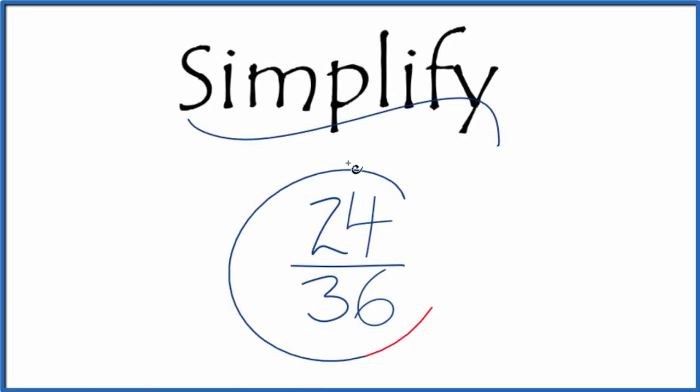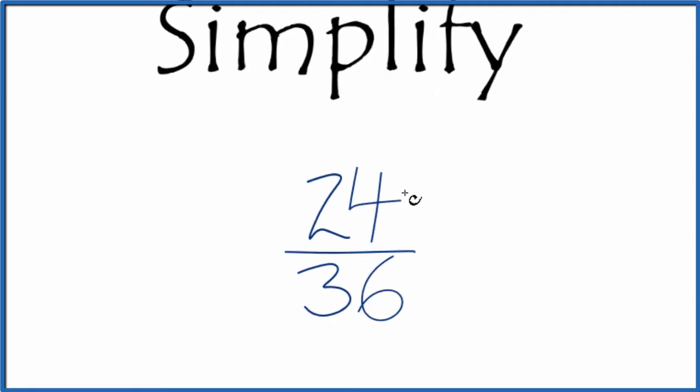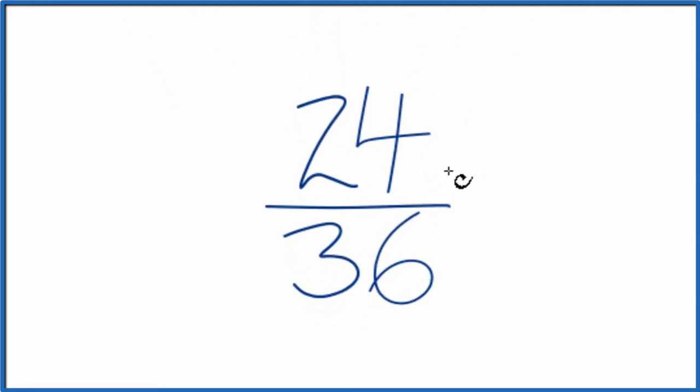Let's simplify the fraction 24/36. And here's how we do it. We're trying to find another fraction that has the same value. It's an equivalent fraction, it's just that we've reduced or simplified it to lowest terms.